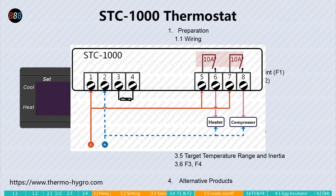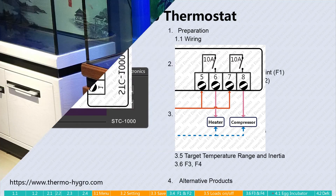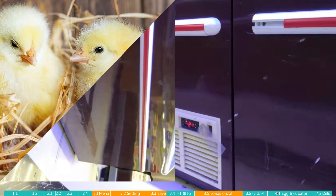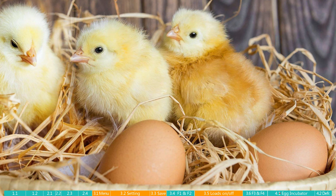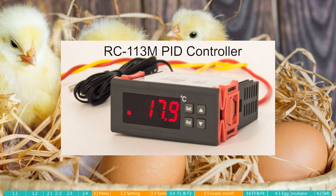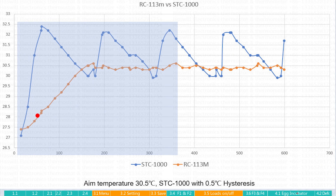Featuring dual relays, the STC-1000 intelligence switch is very powerful and suitable for aquariums, greenhouses, and many applications. However, it is not the best choice for egg incubators, because it cannot control the power of the load and the temperature fluctuation is too wide. As a substitute, the RC-113 microcontroller is highly recommended for controlling incubators, as it can control the load power through the PID algorithm to achieve a gradual increase in temperature.